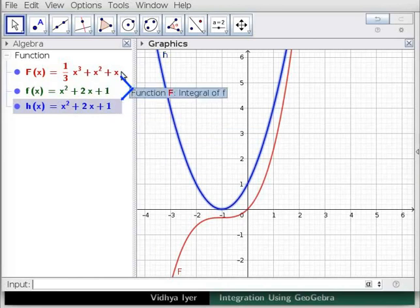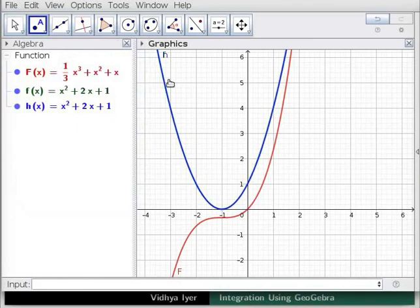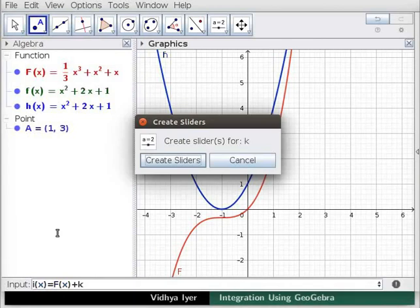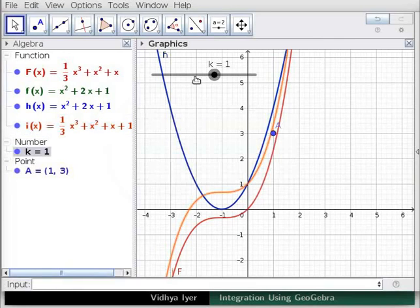Click on point tool and create a point at (1, 3). In the input bar, type the following and press enter. Click on create sliders in the window that pops up. A slider k appears. Double click on slider k.